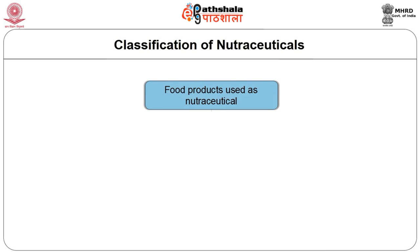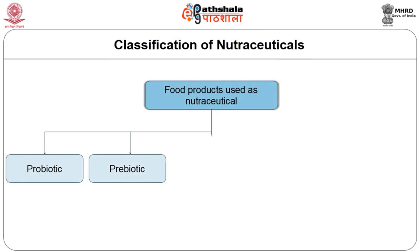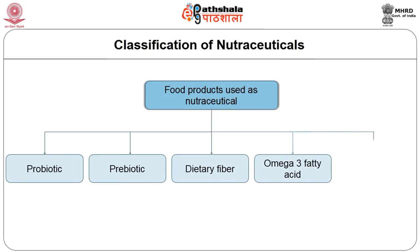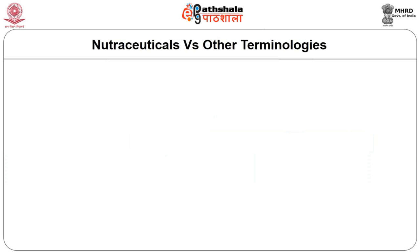The food products used as nutraceuticals can be classified as: probiotics, prebiotics, dietary fiber, omega-3 fatty acids, and antioxidants.